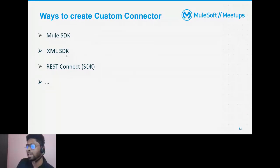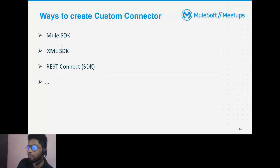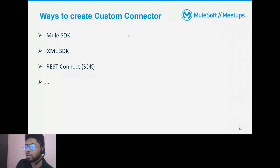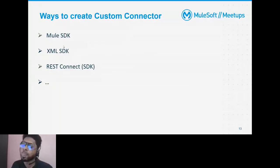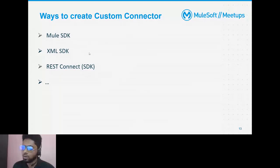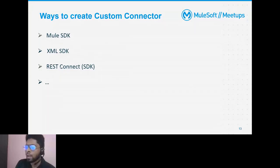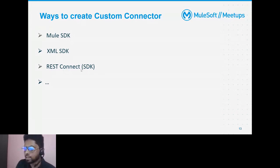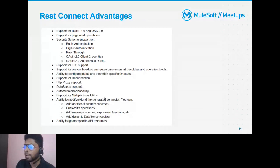XML SDK has many limitations — it cannot develop source-based connectors (endpoint-based connectors), there are no recursive calls possible, and all parameters must follow a valid XML string approach. Given these limitations of Mule SDK and XML SDK, the advantage of REST Connect is little or no coding to generate a connector. Someone not well-versed in Java and wanting to develop a connector based on REST API calls can go with the REST Connect approach.